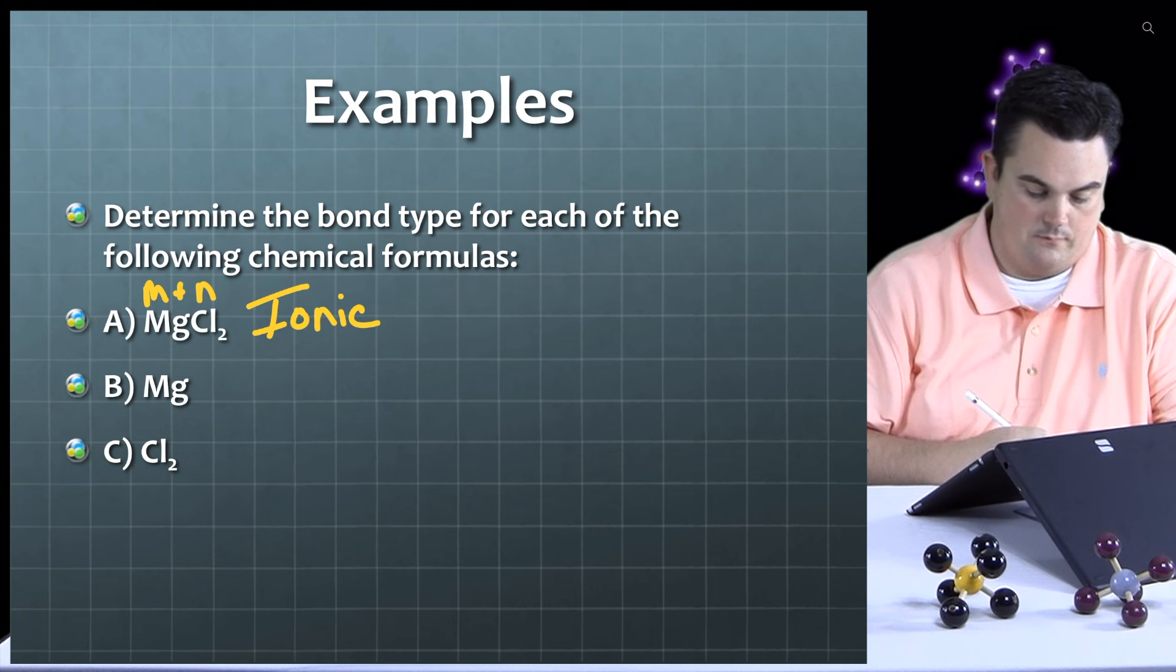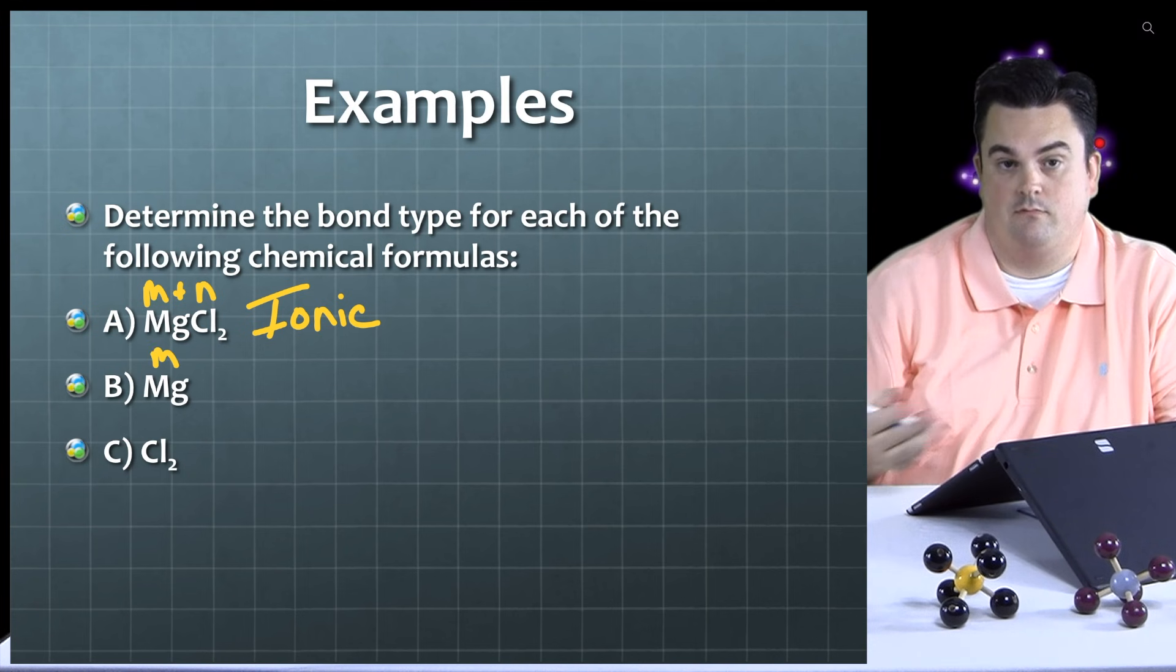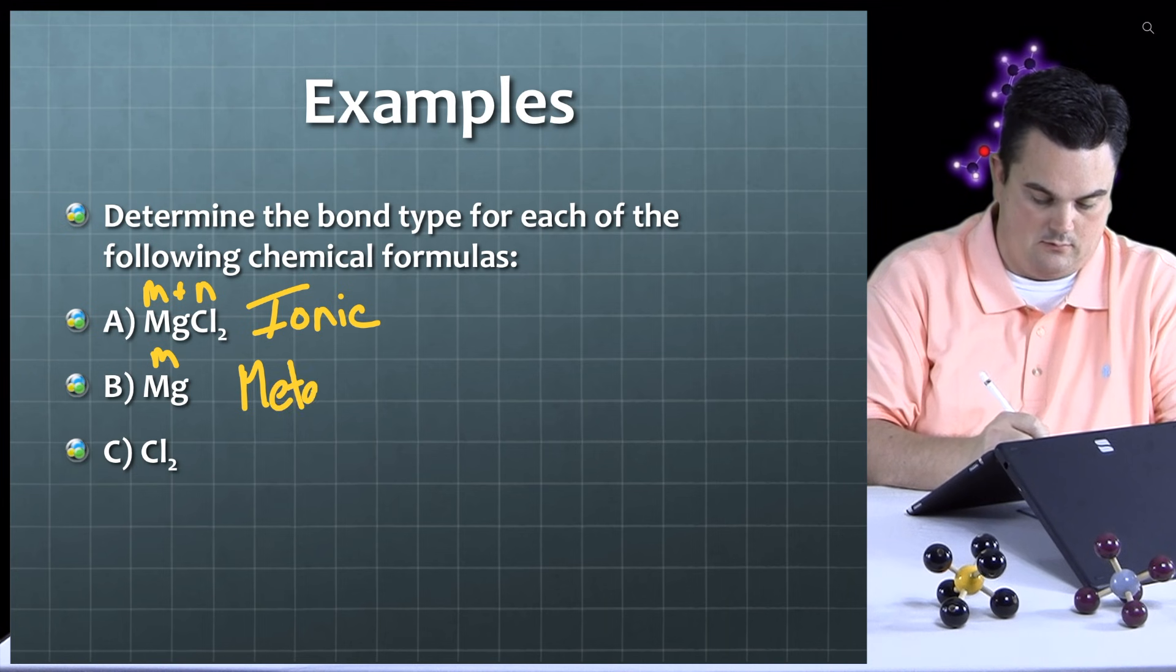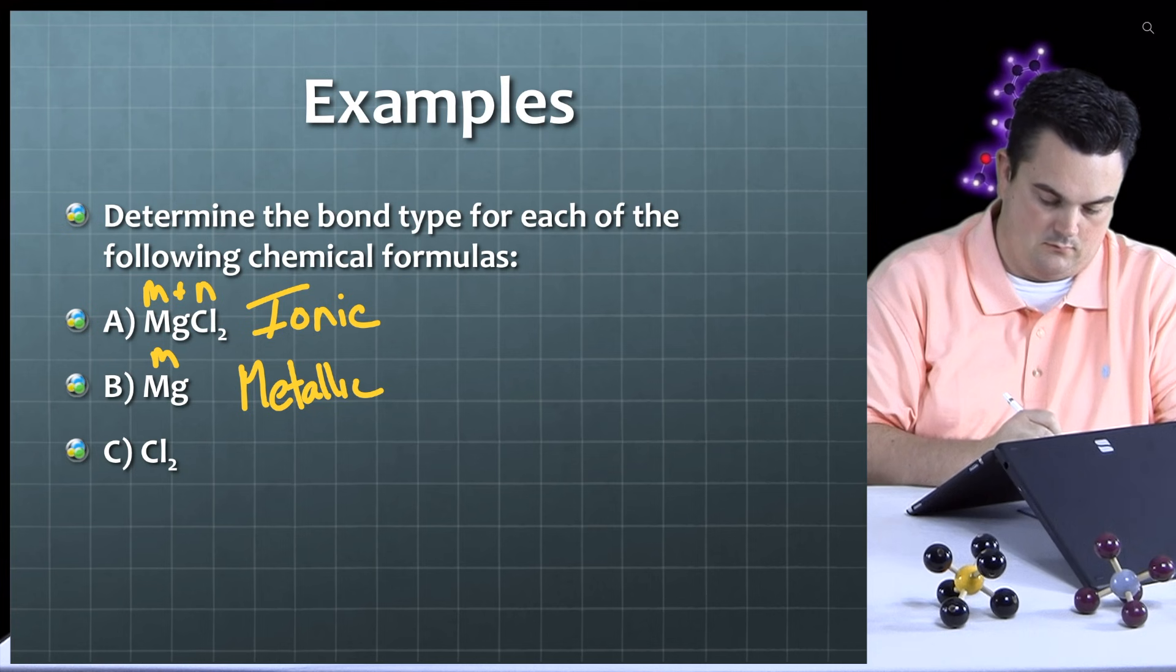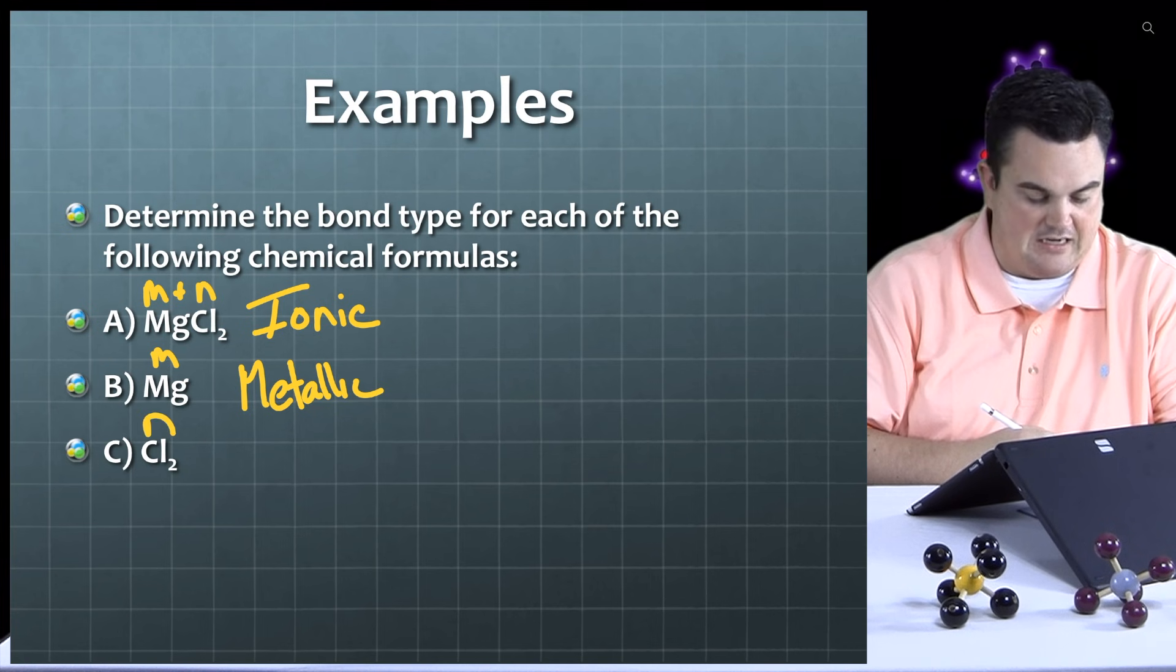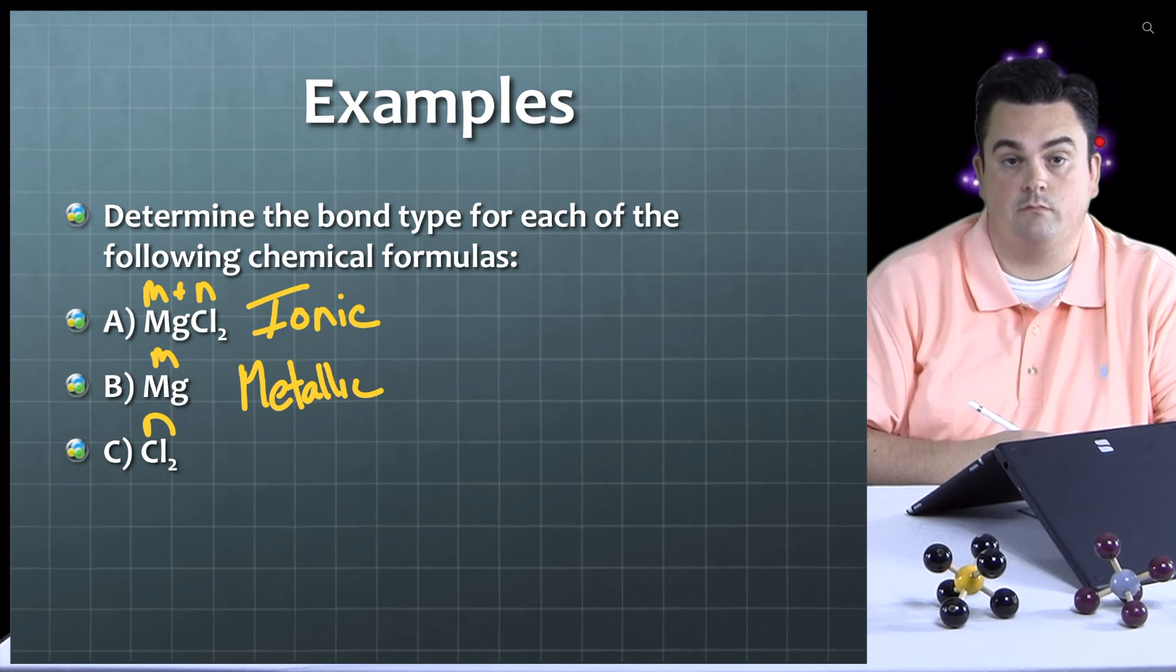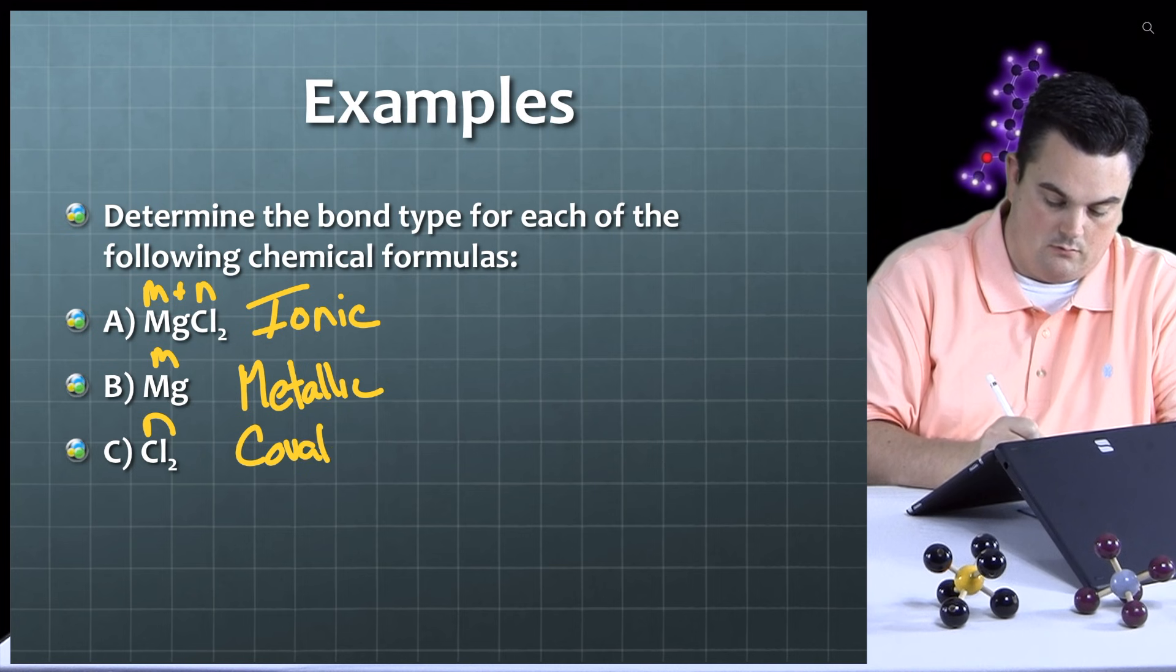Let's take a look at letter B. We've got Mg. How do we classify Mg? We've actually already done that. So that's a metal. So obviously, the bonding must be metallic. Right, you're going to see the metal by itself. And finally, C, we have Cl2. It's the same element. How would we classify chlorine? That's a non-metal. Alright, so if I have two non-metals, what should my bond type be? That's straight out of the definition for covalent. Very good.